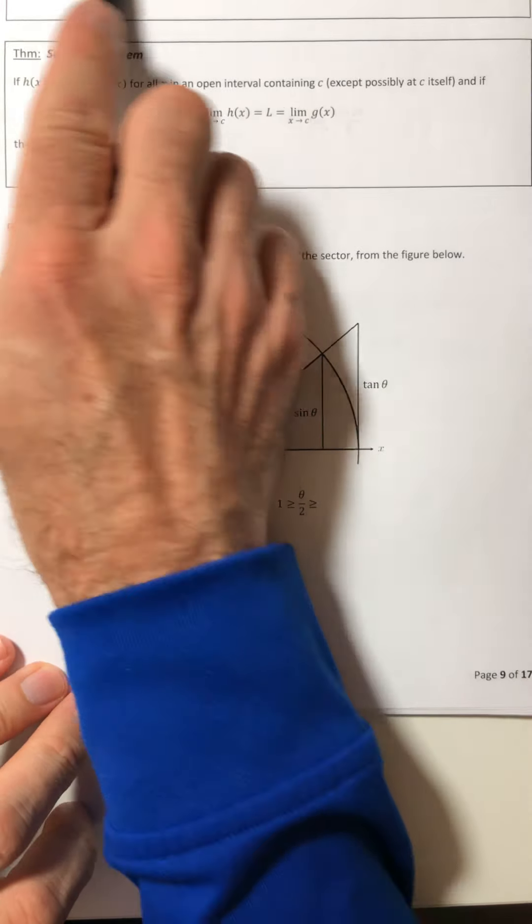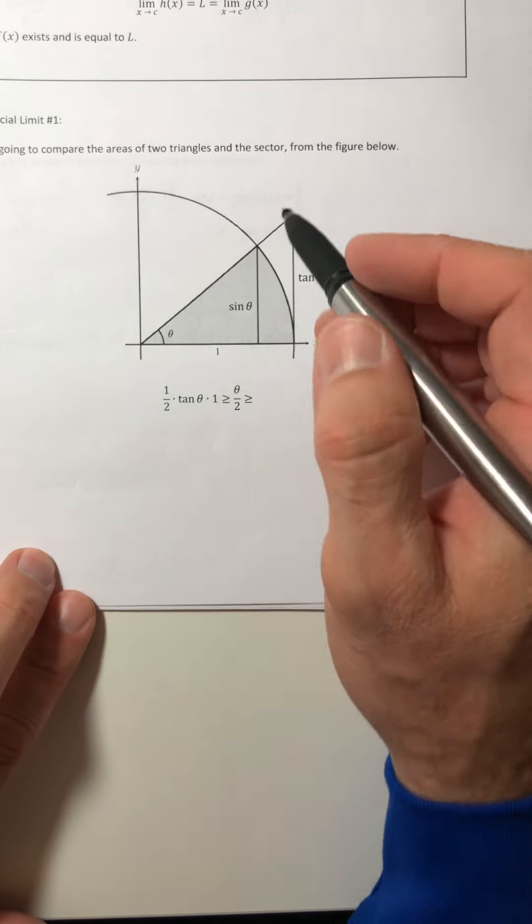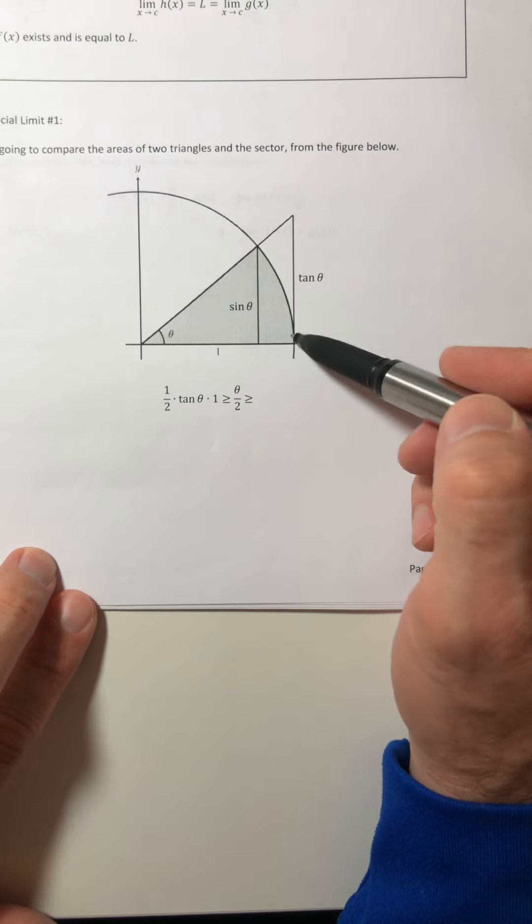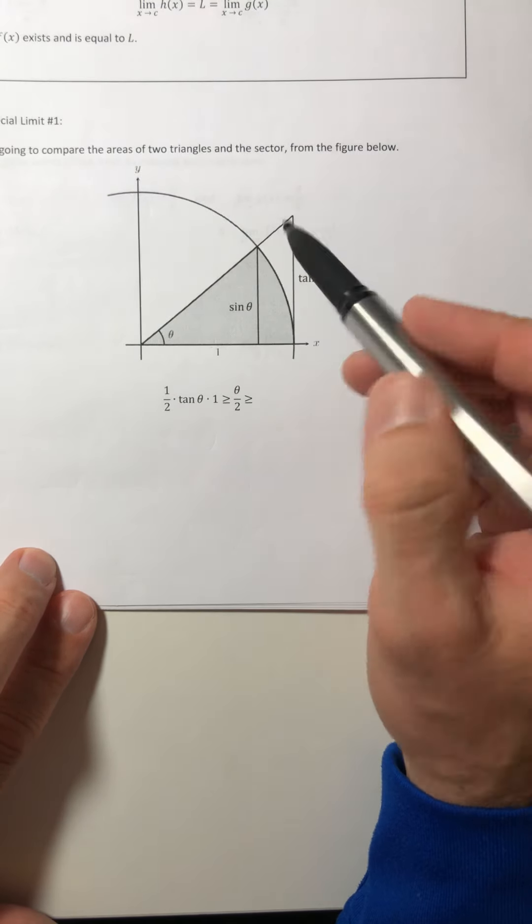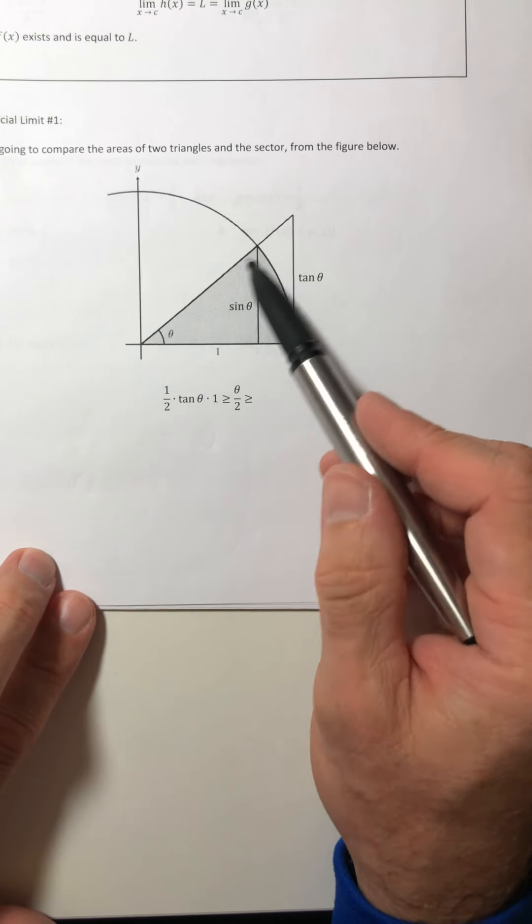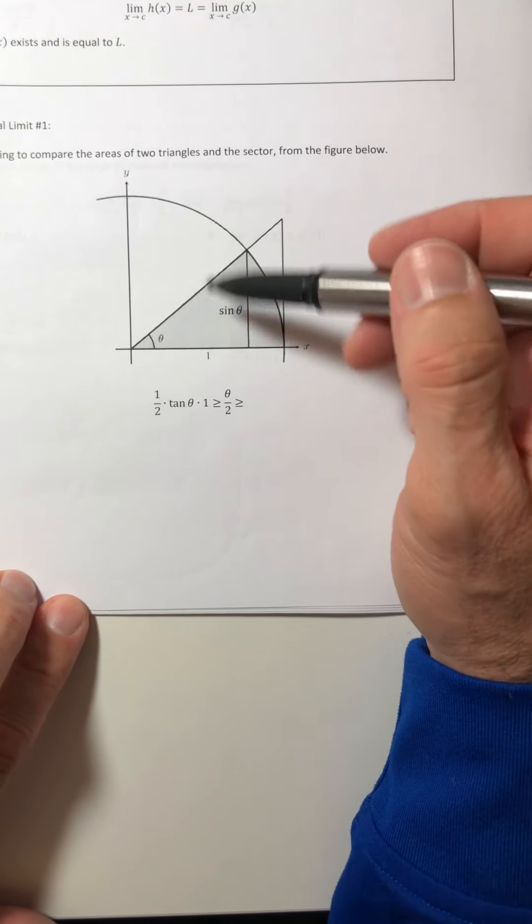Because if the small one and the big one are the same, then the middle one has to be as well. Okay, so we're going to use this theorem to prove out that first one up there. So we've got to look at some areas and kind of set them up and compare them. So we're going to look at the areas of the two triangles and the sector from this figure. So we have two triangles, we have a big one, and then we've got the smaller one, and then we have this sector area, that pie slice. So we're going to order...